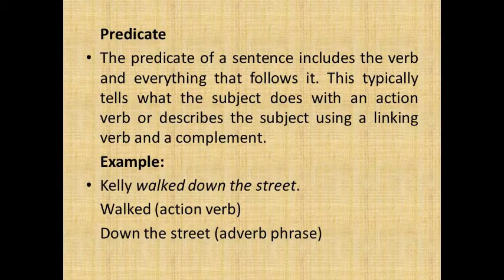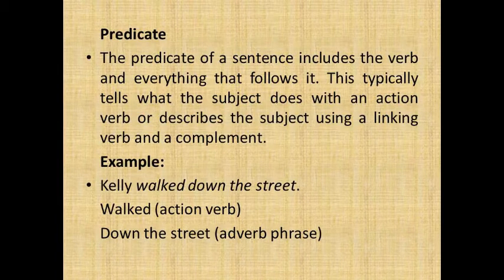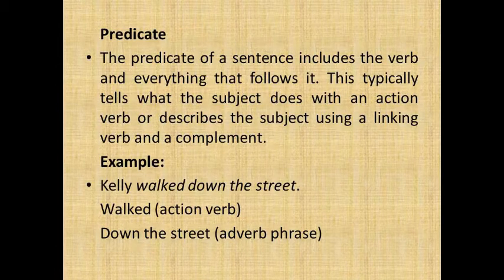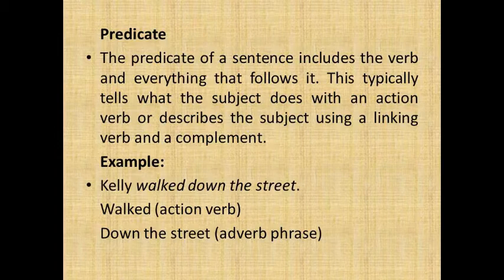Next is the predicate. The predicate of a sentence includes the verb and everything that follows it. It tells us what the subject does with an action verb, or describes the subject using a linking verb and a complement. For example: 'Killie walked down the street' — 'walked' is the action verb and 'down the street' is an adverb phrase.